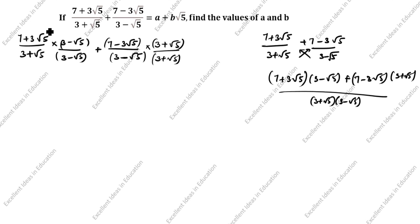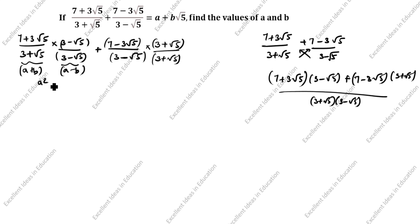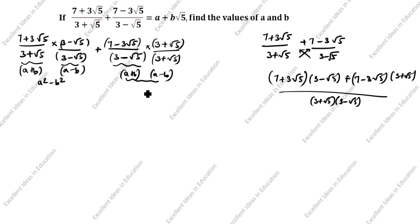You see the denominator is (a + b)(a - b). What is the formula of (a + b)(a - b)? It is a² - b². Same way, (3 + √5)(3 - √5) uses the (a + b)(a - b) formula, which gives a² - b².